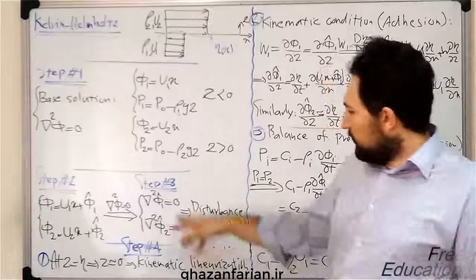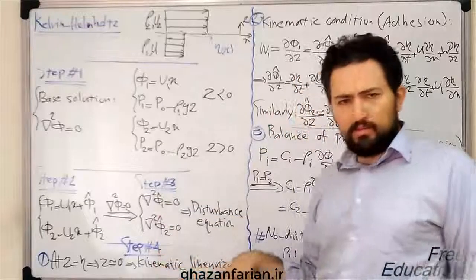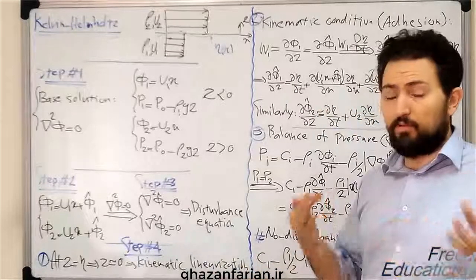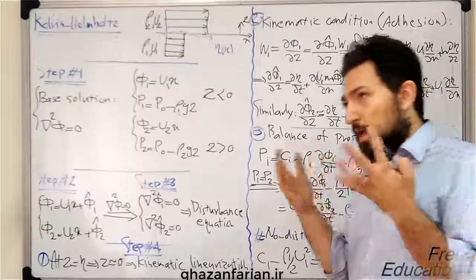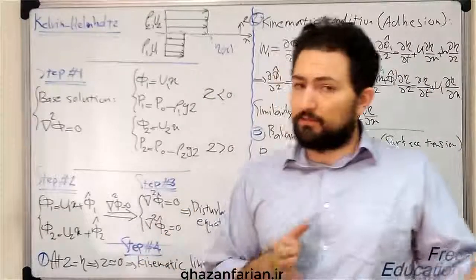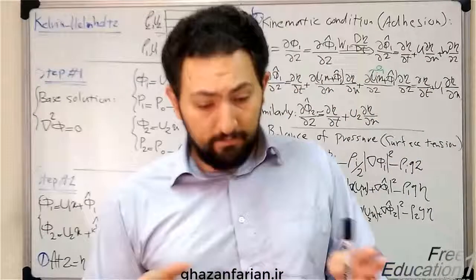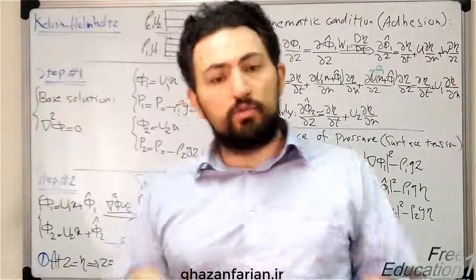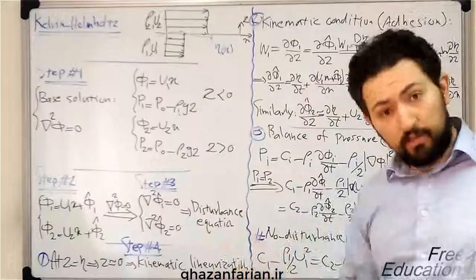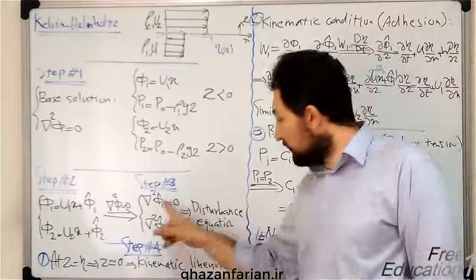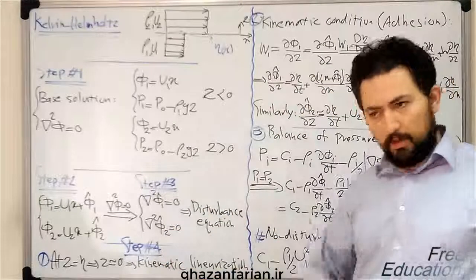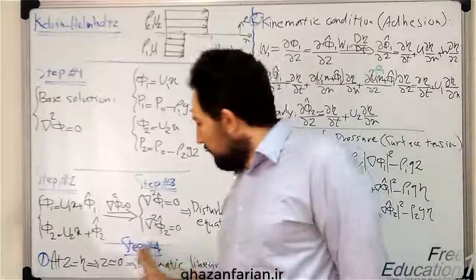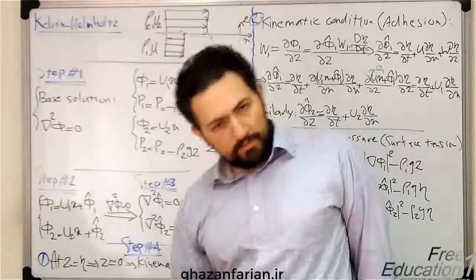The governing equation does not need linearization. For example, if you want to investigate the instability analysis of the Navier-Stokes equation, the Navier-Stokes equation itself is non-linear, so the disturbance equation would also be non-linear in that condition. Step 4 is the linearization process.